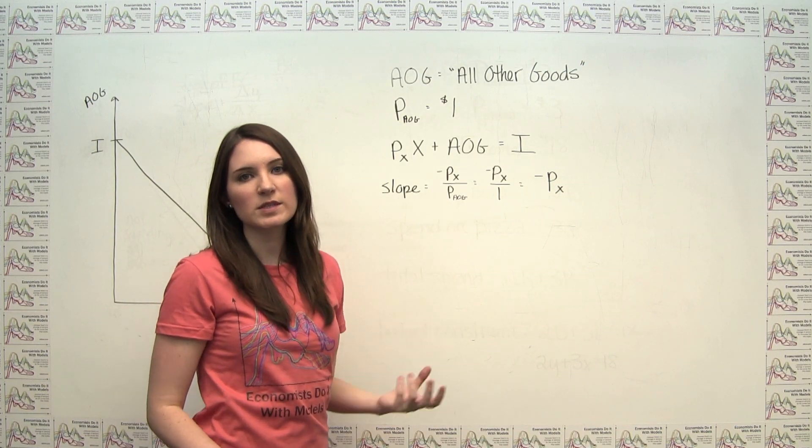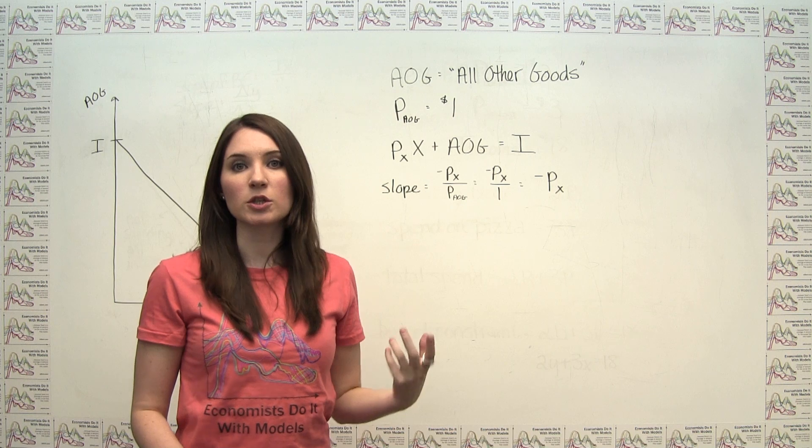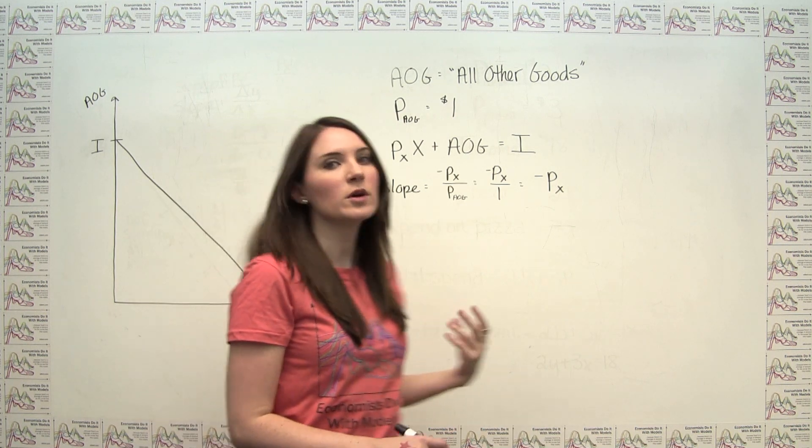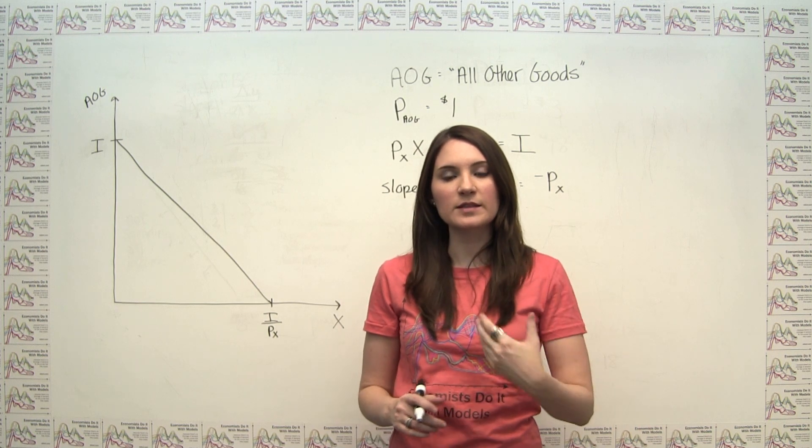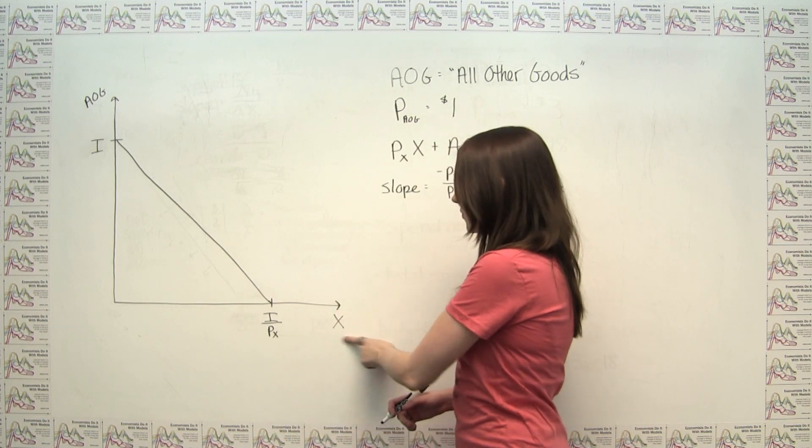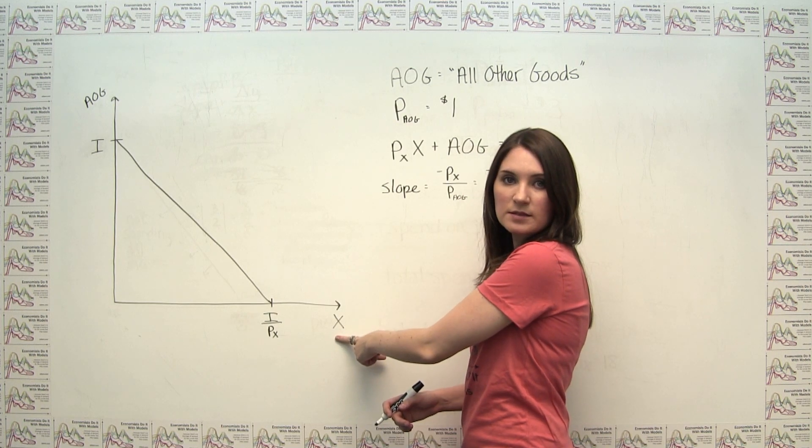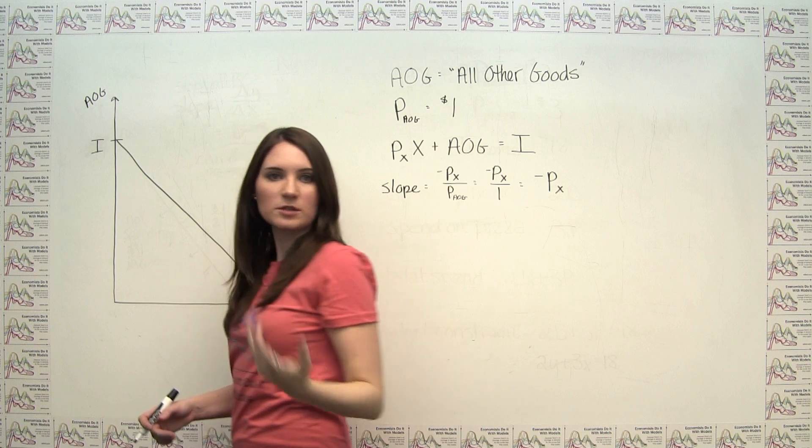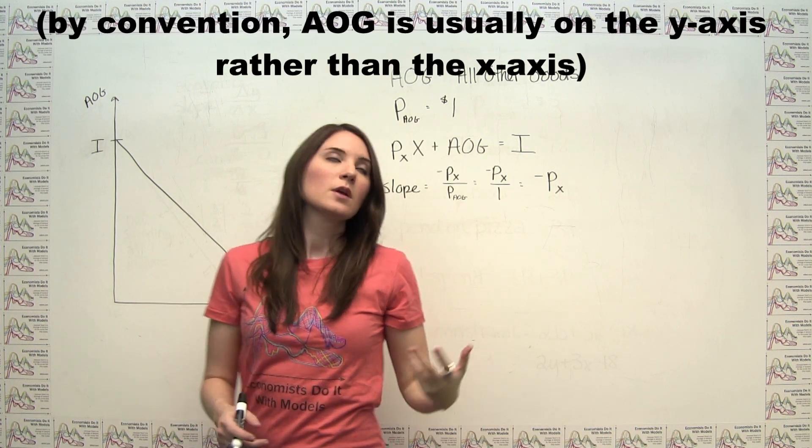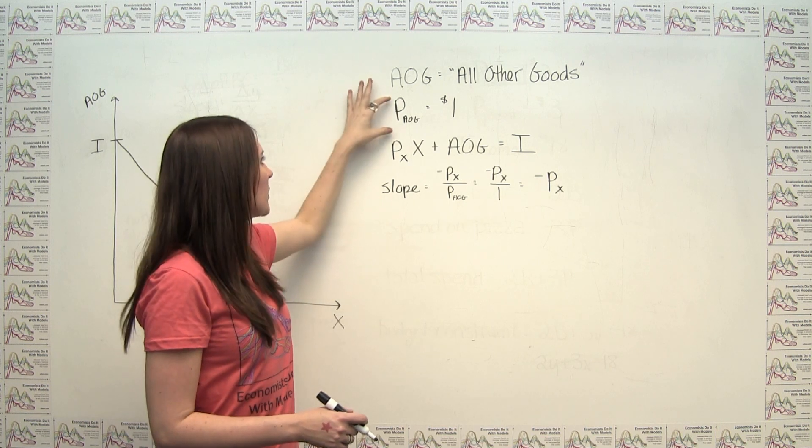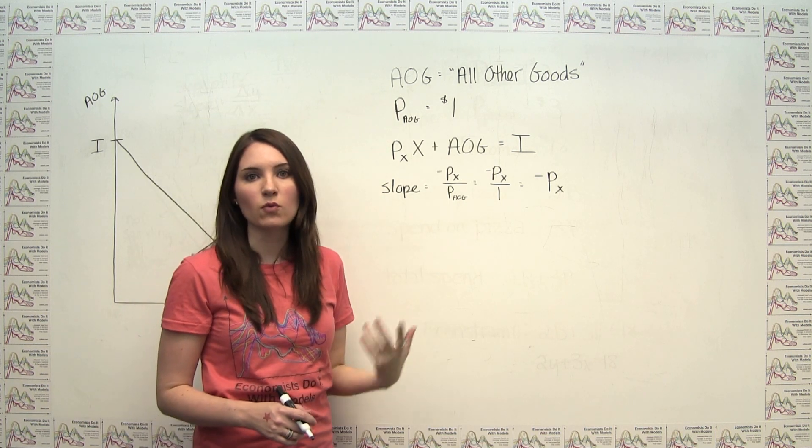Sometimes, rather than explicitly considering two particular goods, x and y, economists instead look at one good x versus this concept of all other goods. So we'll see here that we've put good x on the x-axis as usual, but then we've labeled the y-axis as AOG for all other goods. And we can think of this all other goods category as just having a price that's normalized to one dollar.